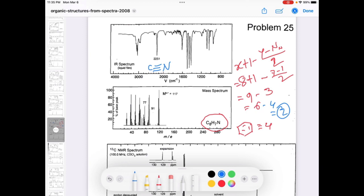And that always has a band or peak around 2200 to 2300. So here we see there is a band at 2251. That is proving that we have a nitrile group, C triple bond N. For a triple bond, the degree of unsaturation is 2, because it's equivalent to two double bonds.